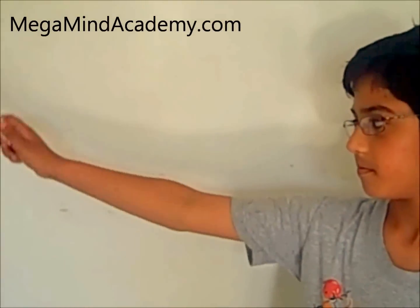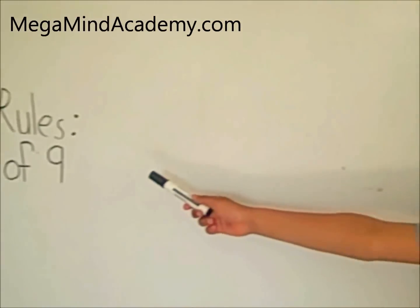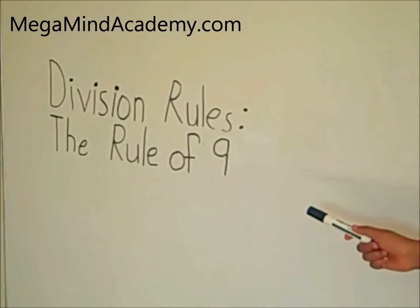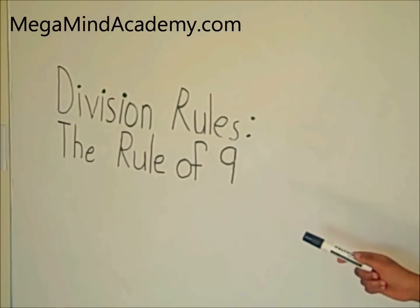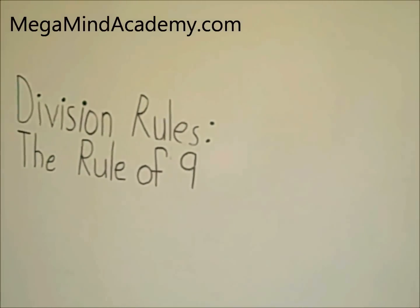Hi, today we're going to learn about division rules — the rule of 9. The rule of 9 is easy. In order for a number to be divisible by 9, you have to add up all the digits, and the total of the digits has to be divisible by 9.